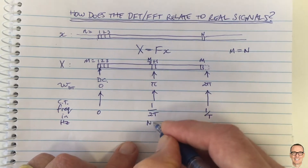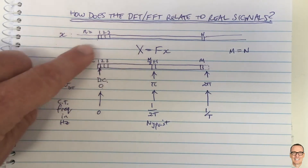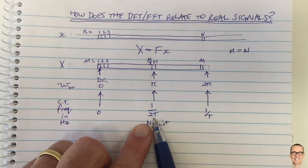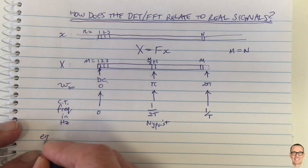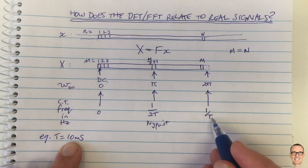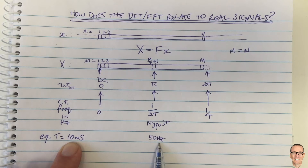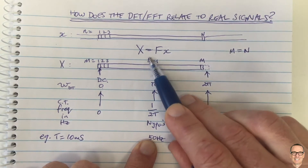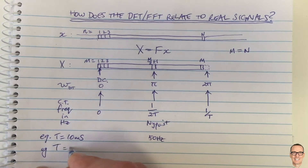You'll recognize that 1/(2T) is the Nyquist frequency. So when you run the FFT in MATLAB on your time domain signal, the element at index M/2 + 1 corresponds to the Nyquist frequency, and the first element is DC. For example, if you're sampling at a period of 10 milliseconds, then 1/T = 100 Hz and the Nyquist frequency is 50 Hz, appearing at element M/2 + 1 of your vector.